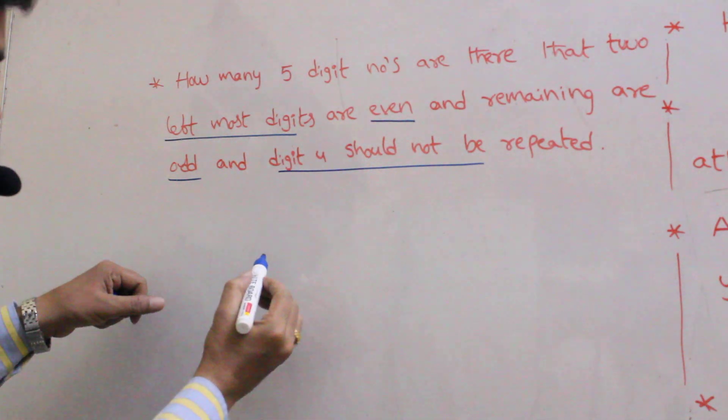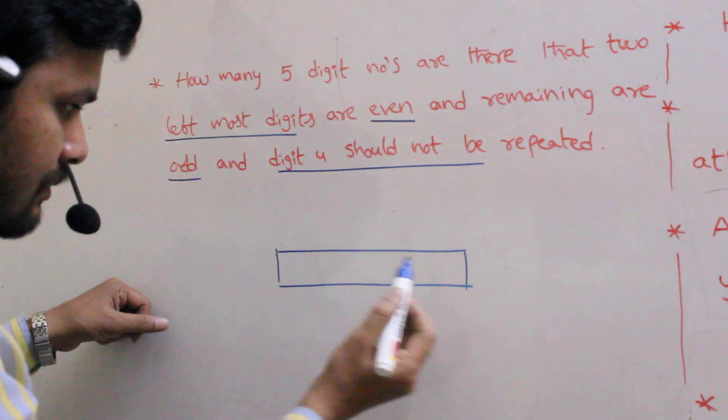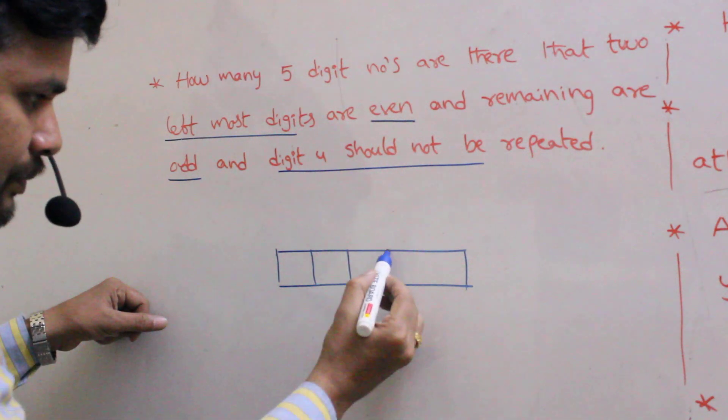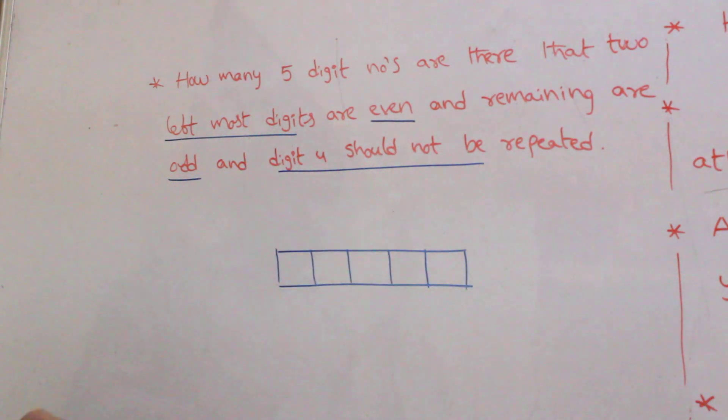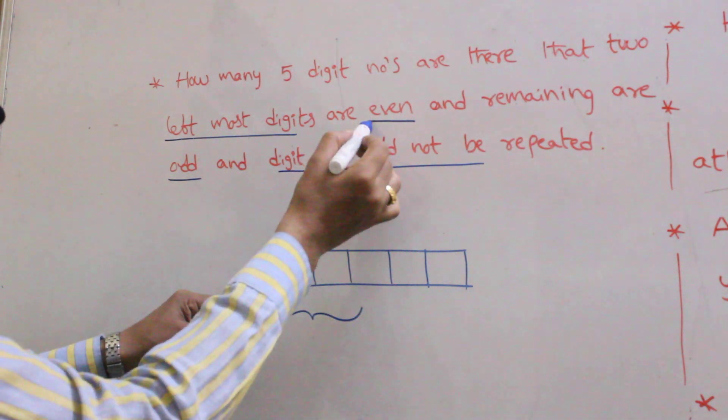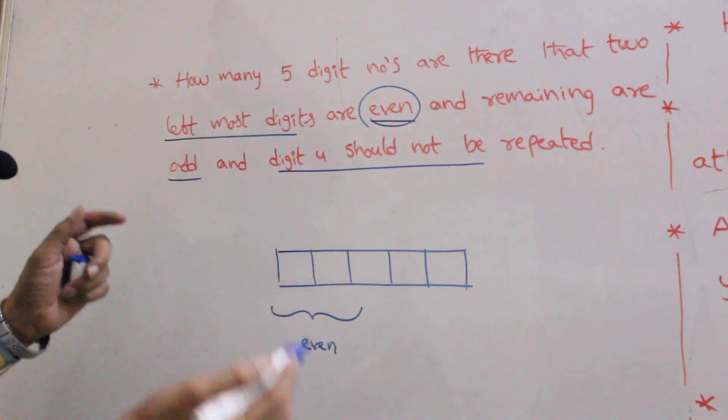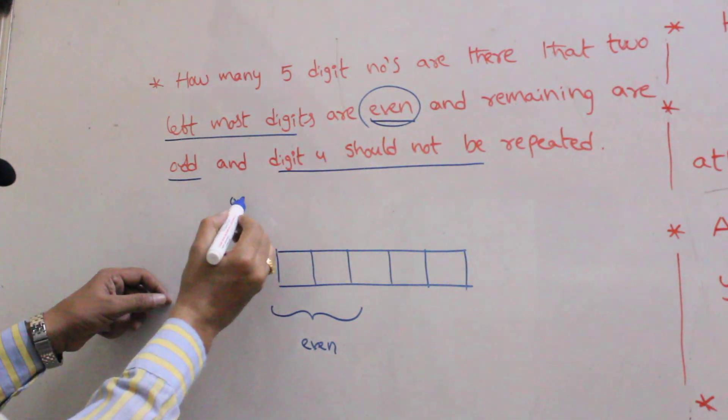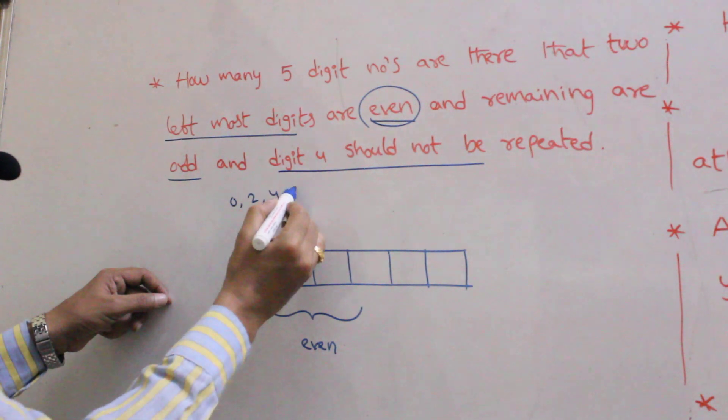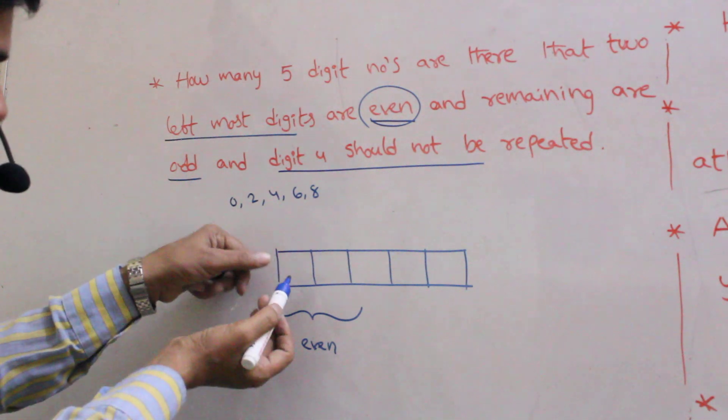This is the 5 digit number. Just observe this one. 1, 2, 3, 4, 5. Left most 2 digits are even. These are the even numbers. Generally, what are the even numbers are there? 0, 2, 4, 6, 8. Suppose if you write 0 in this case, the unit digit, the entire number will be considered as a 4 digit number.